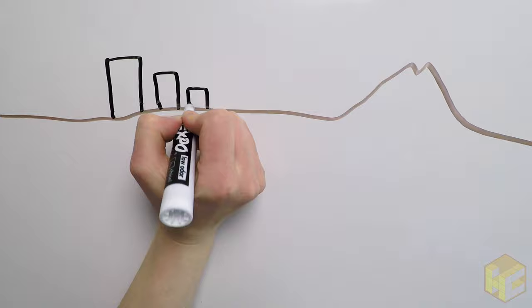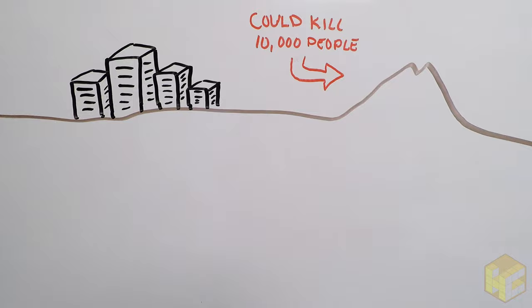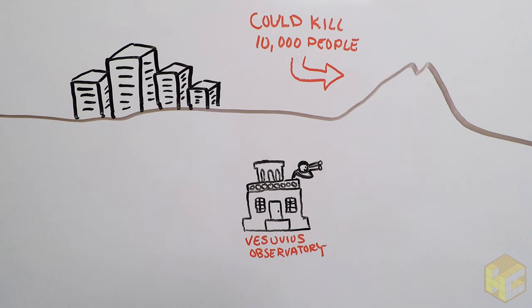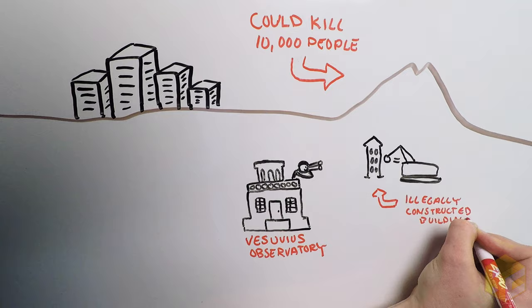Estimates say that another large eruption, a 4 or 5 on the VEI, could kill over 10,000 people. The Vesuvius Observatory monitors the mountain 24-7 for signs of activity that would precede another eruption, and there is an evacuation plan in place. The government of Italy is working to reduce the population living near the volcano by destroying illegally constructed buildings and establishing a national park around the mountain.